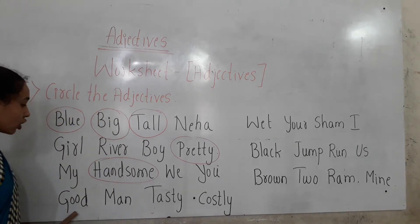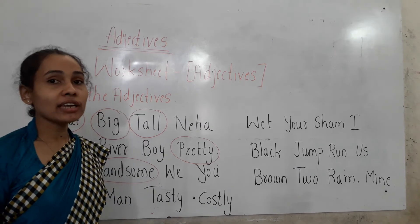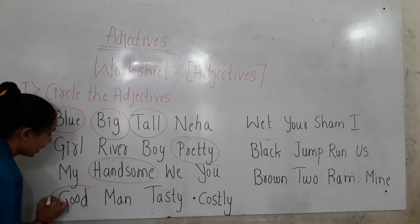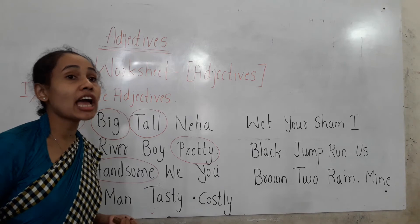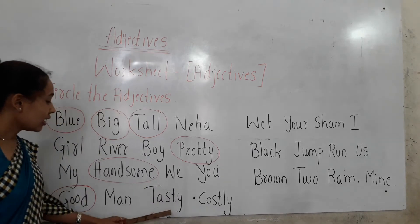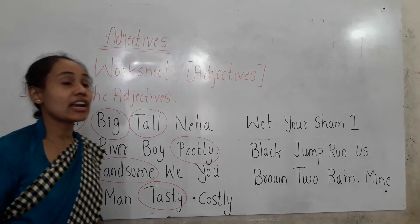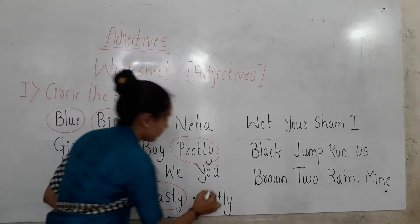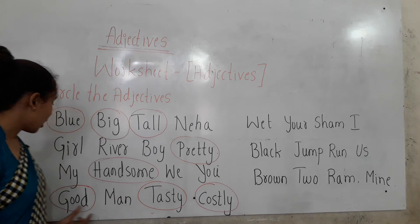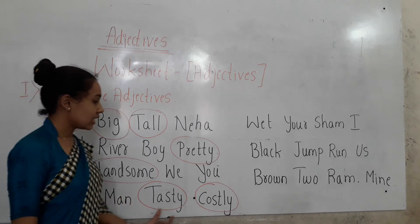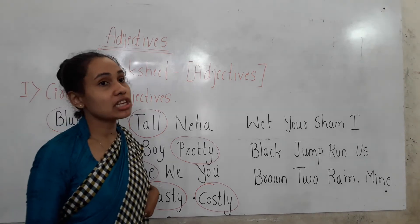Next we have good, mad, tasty, costly. Good is an adjective — 'he is a good boy,' so good describes the noun. Tasty is also an adjective — 'tasty food.' Costly is also an adjective. So good, tasty, and costly are describing words which describe nouns.